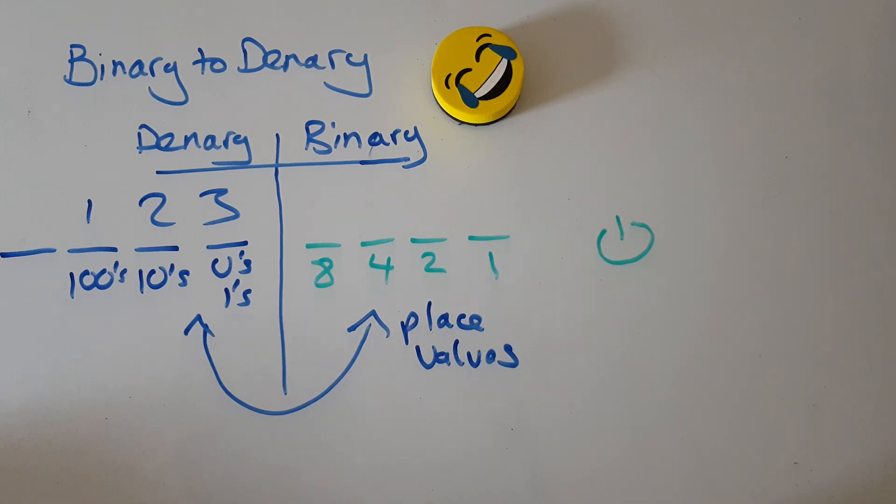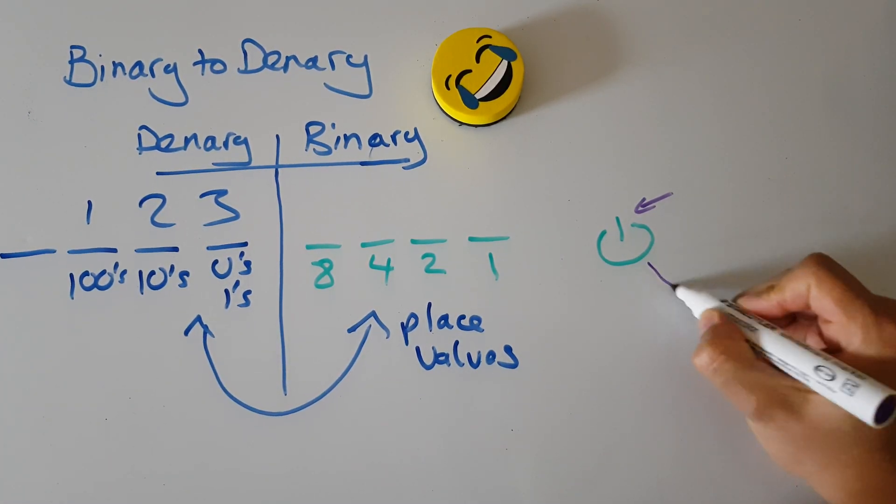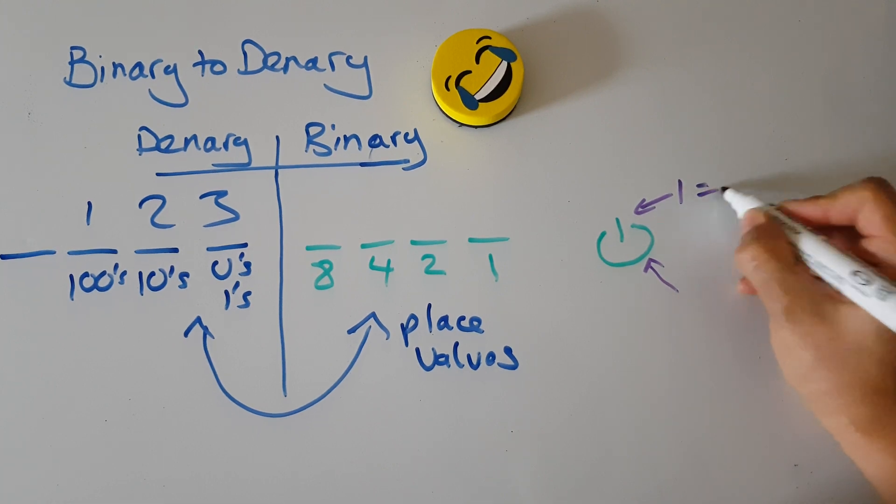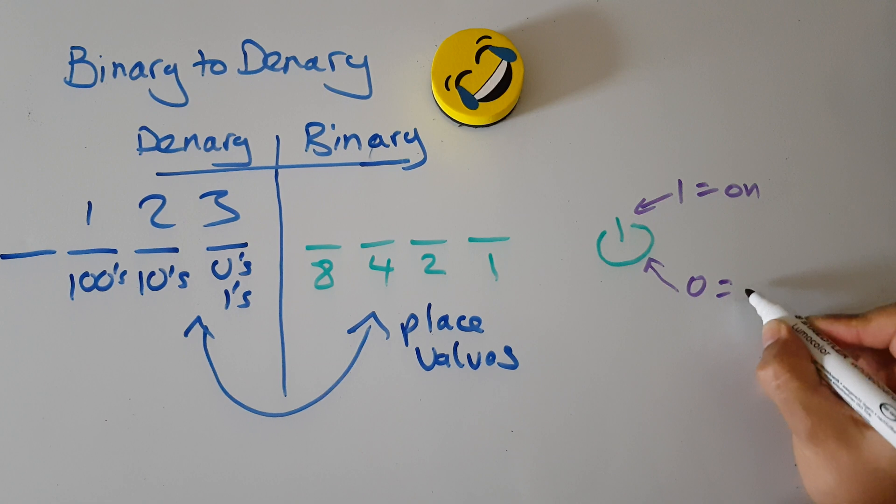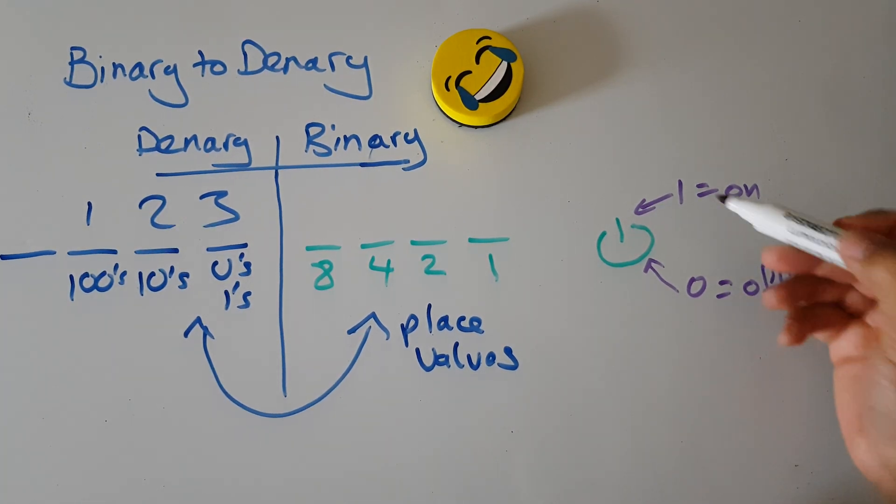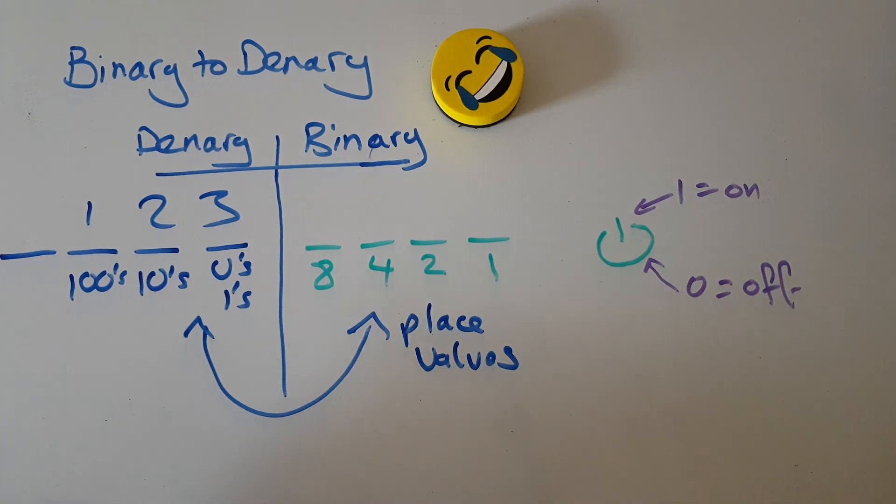What does this even mean? Well, if it's to do with power, power can only be in two states. Either it's a one, which means it's on, or it's a zero, which means it's off. So one means on and zero means off.